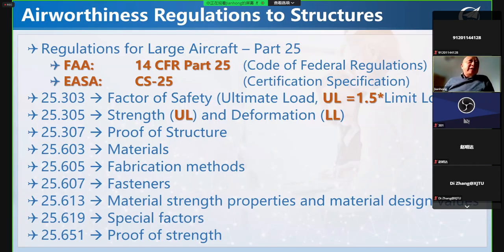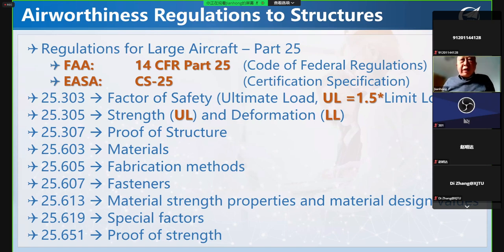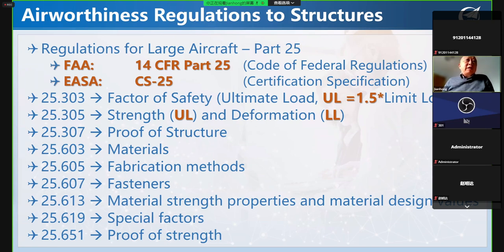From the regulation point of view, for large transport aircraft, the FAA has 14 CFR Part 25, and EASA has Certification Specification 25 — the detailed chapters are the same. Chapter 303 is for the factor of safety dealing with ultimate load. 305 is strength and deformation. 307 is proof of structure. 603 is materials, and 605 is fabrication method. 607 is fasteners. 601.1 is material strength property and material design values. 619 is special factors for development or other considerations.